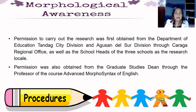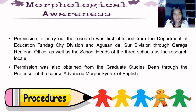Permission to carry out the research was first obtained from the Department of Education, Tandag City Division, and Agusan del Sur Division, through Caraga Regional Office, as well as the school heads of the three schools as the research locale. Permission was also obtained from the graduate studies dean through the professor of the course Advanced Morphosyntax of English. The teacher-researchers informed the students about the study, asked for their consent, and clarified that their participation would not affect their academic grades. Student consent was then obtained.